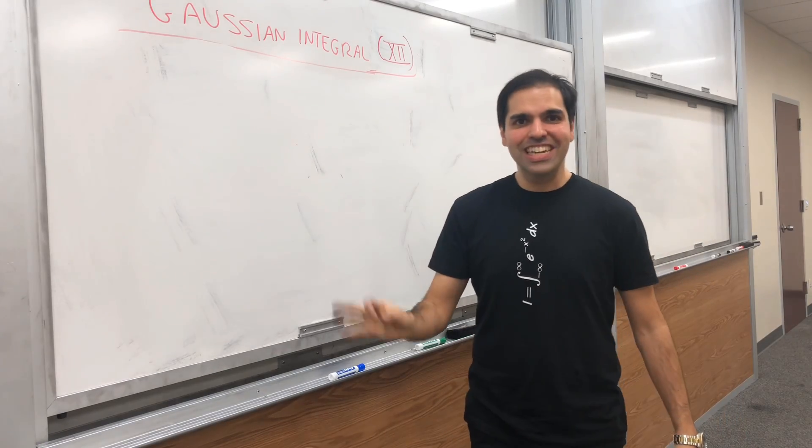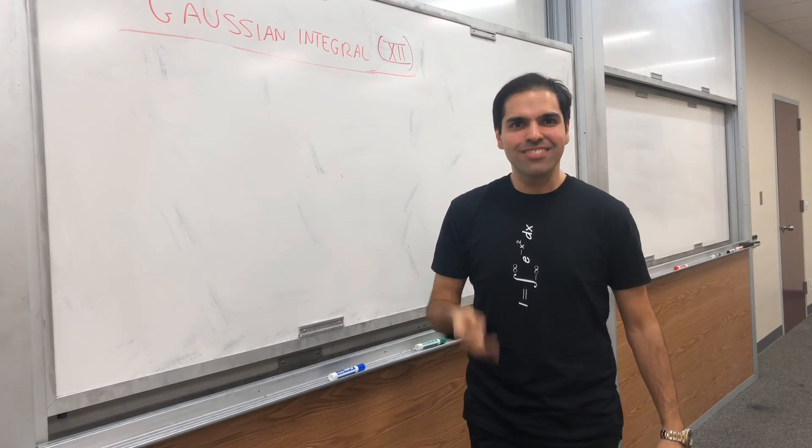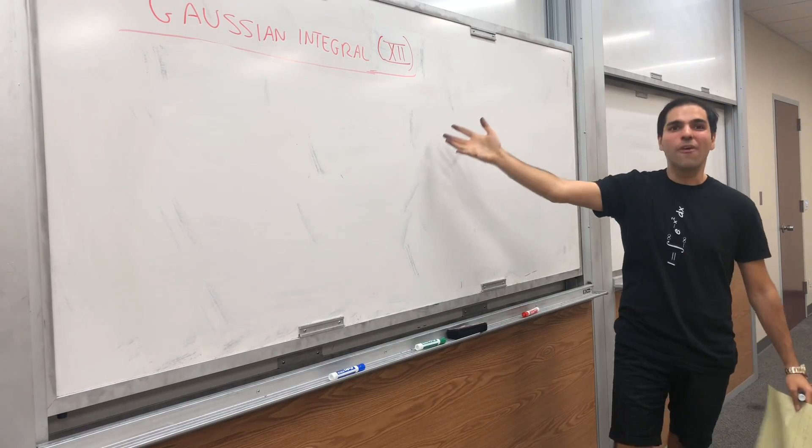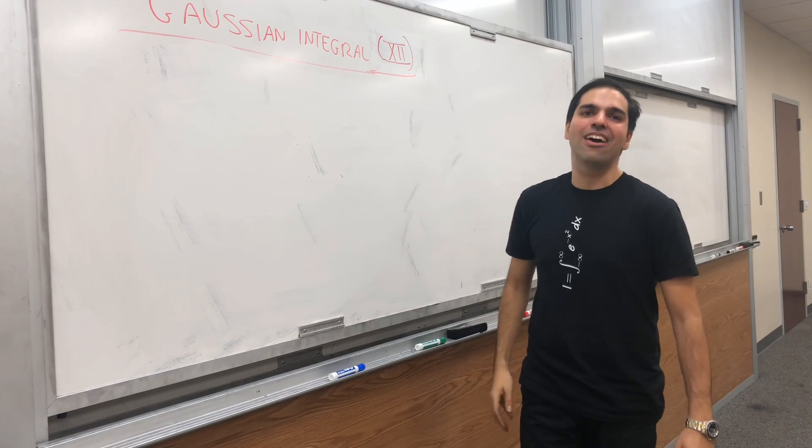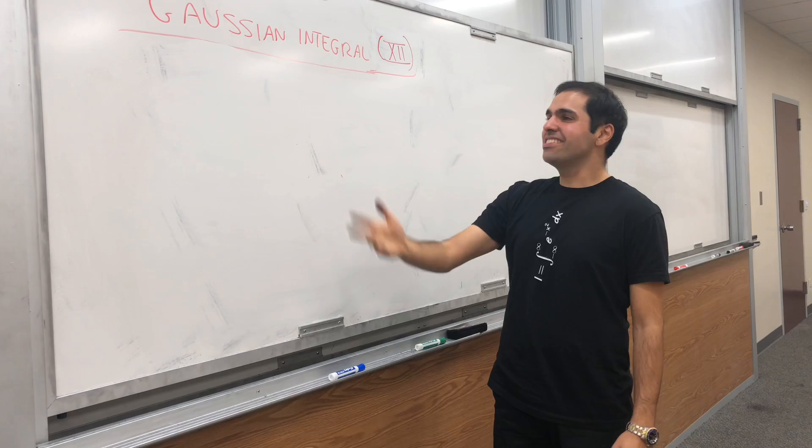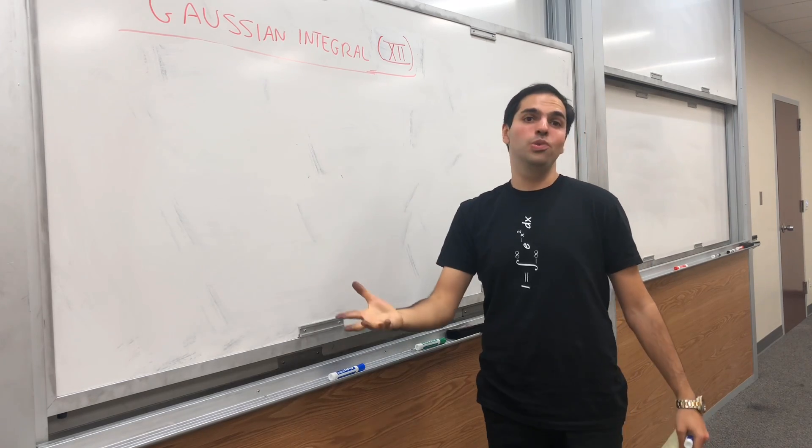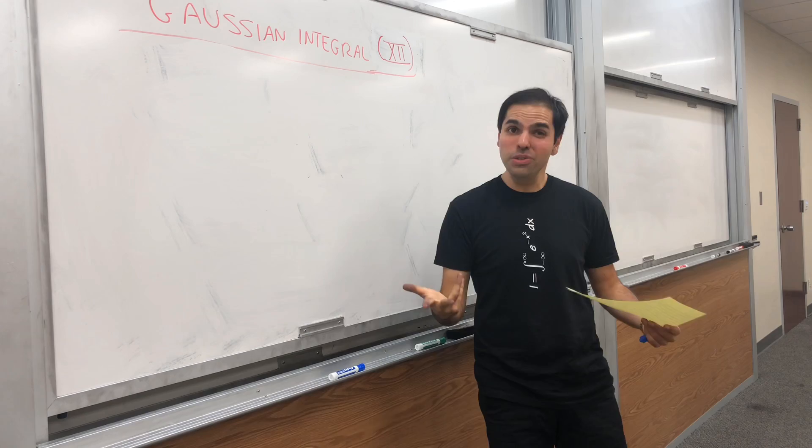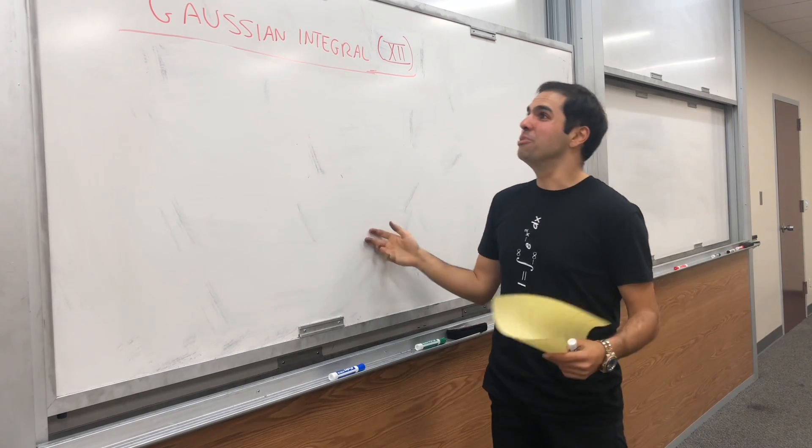All right, thanks for watching, and congratulations for making it this far. Welcome to our final way of evaluating the Gaussian integral. This is what I like to call the Ramanujan way, because it uses a formula from Ramanujan.